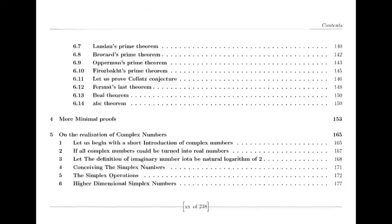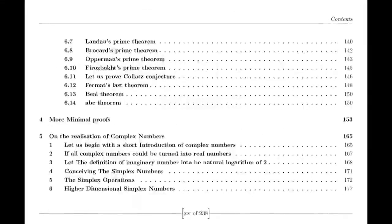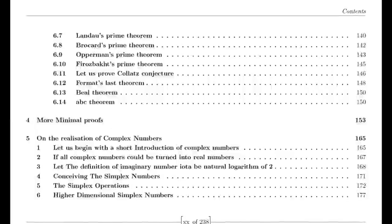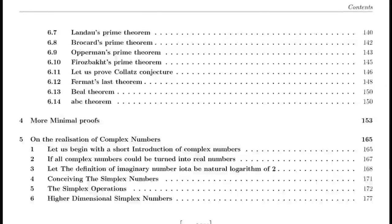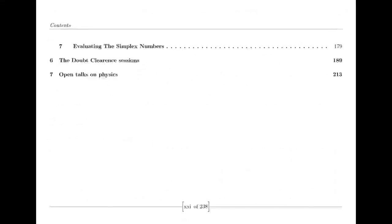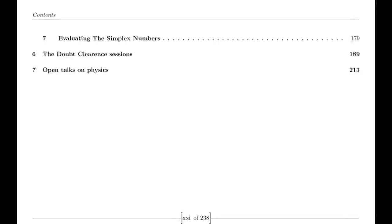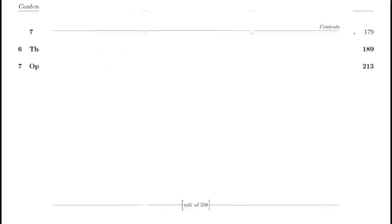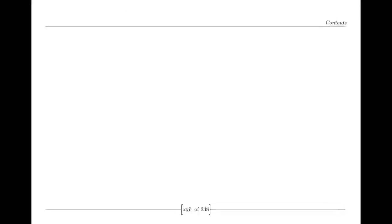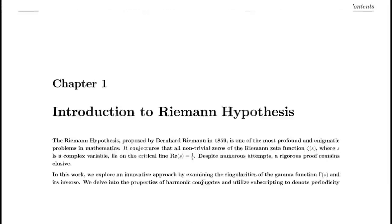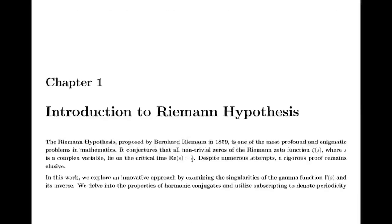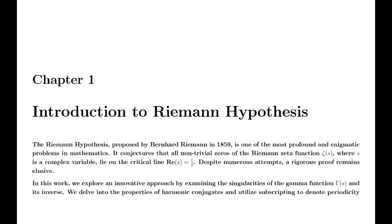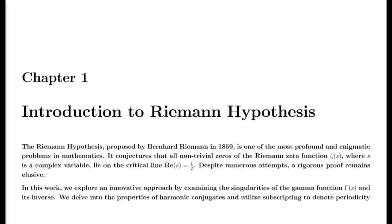Riemann was also influenced by the Dirichlet eta function, defined by an alternating series. This function is closely related to the Zeta function and provides valuable insights into its behavior, particularly for values of S less than 1. The relationship between the eta function and the Zeta function is encapsulated in a simple formula involving the gamma function and powers of 2, which helps in understanding the Zeta function's properties across different regions.